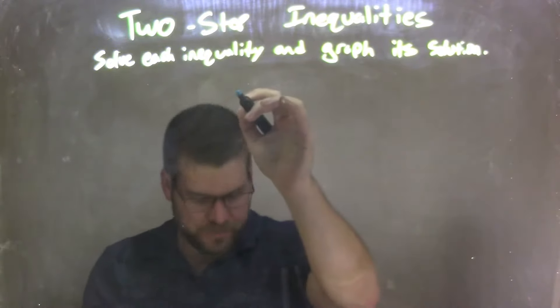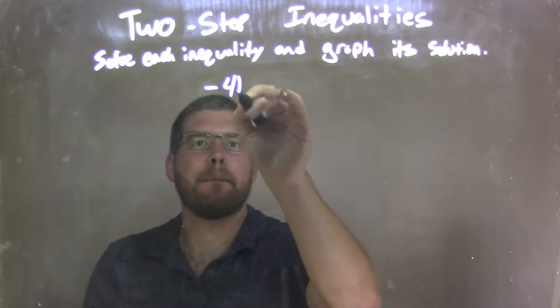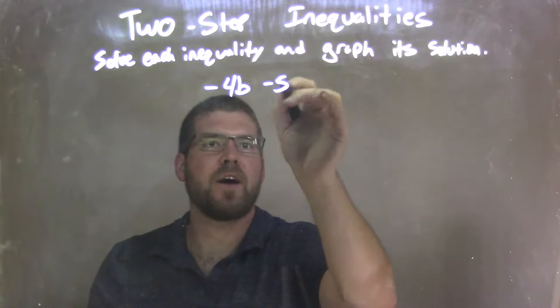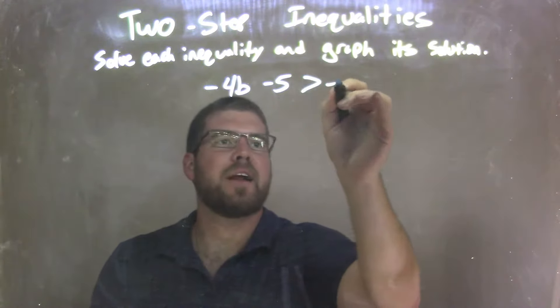So if I was given this inequality: negative 4b minus 5 is greater than negative 25.